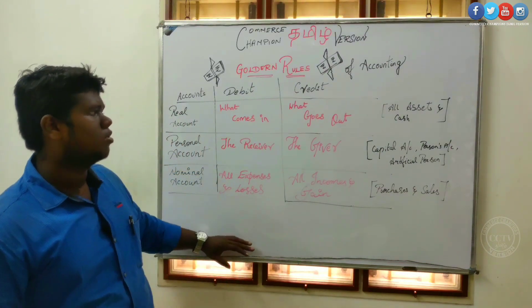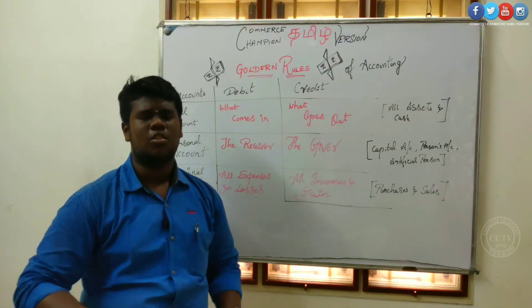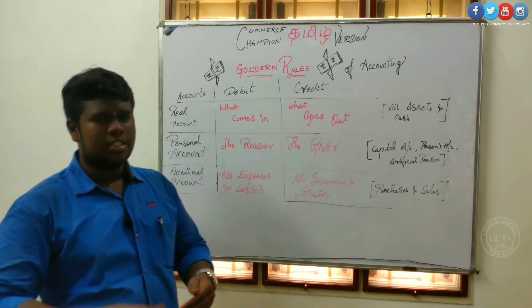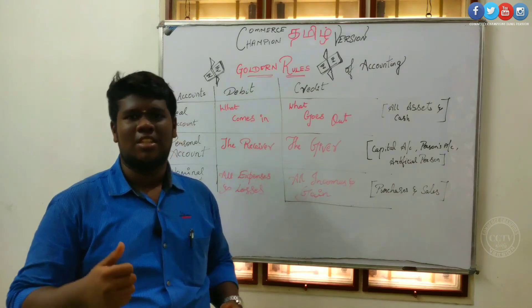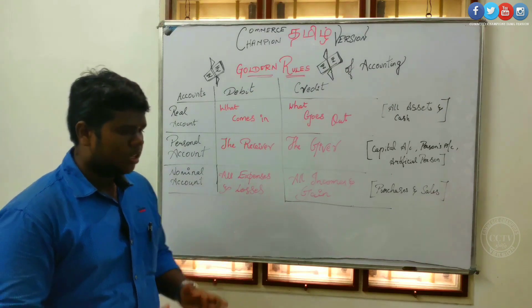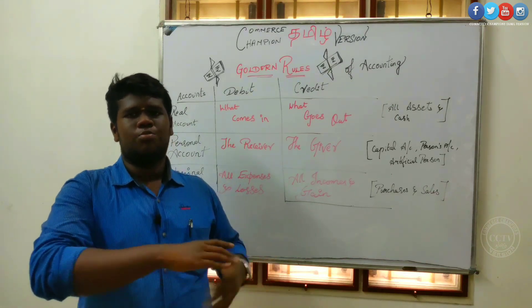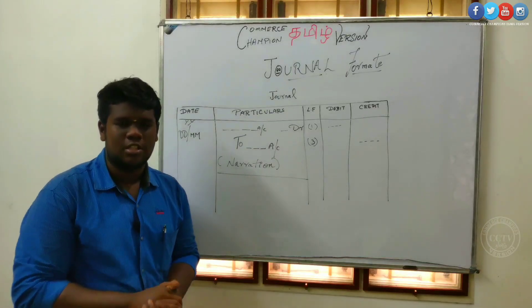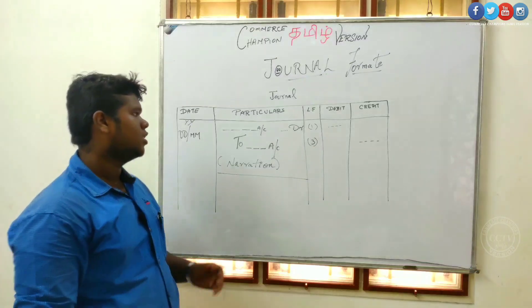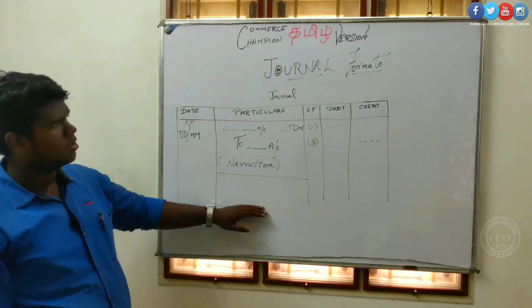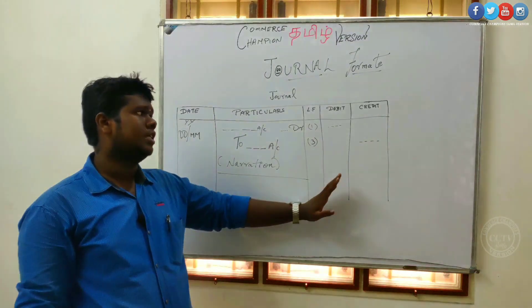These are simple and easy rules. If you want to know these rules, you can use the journal. This is the basics. Now we will see the journal format — date, particular, ledger folio, debit and credit.